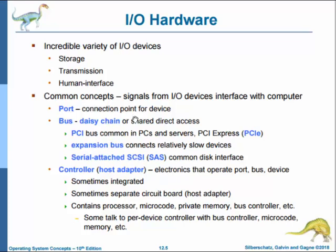Computers operate many kinds of devices, most fitting into the general categories of storage (for example, disks or tapes), transmission devices (such as network connections and Bluetooth), and human interface devices (such as screen, keyboard, mouse, audio in, and audio out). Despite the incredible variety of these I/O devices, we only need a few concepts to understand how they are attached and how software can control the hardware. A device communicates with the computer system by sending signals over a cable or through the air.